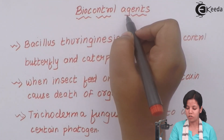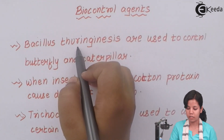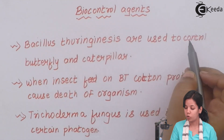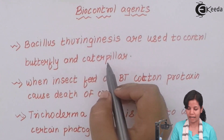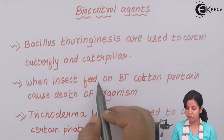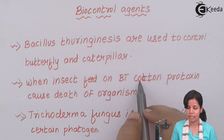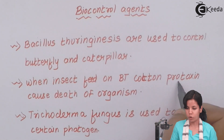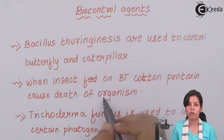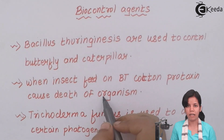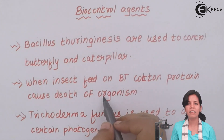Bacillus thuringiensis (BT) are used to control butterflies or caterpillars. When insects feed on Bt-Cotton, Protoxin causes the death of the organism. Basically, BT toxin is engulfed by the organism and converted into Protoxin inside the gut of the organism, and eventually the organism dies.